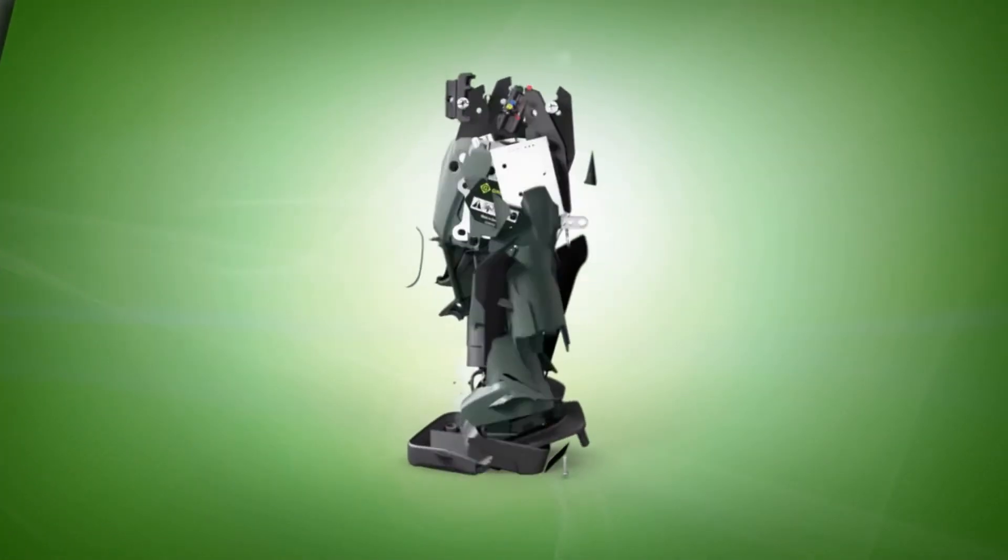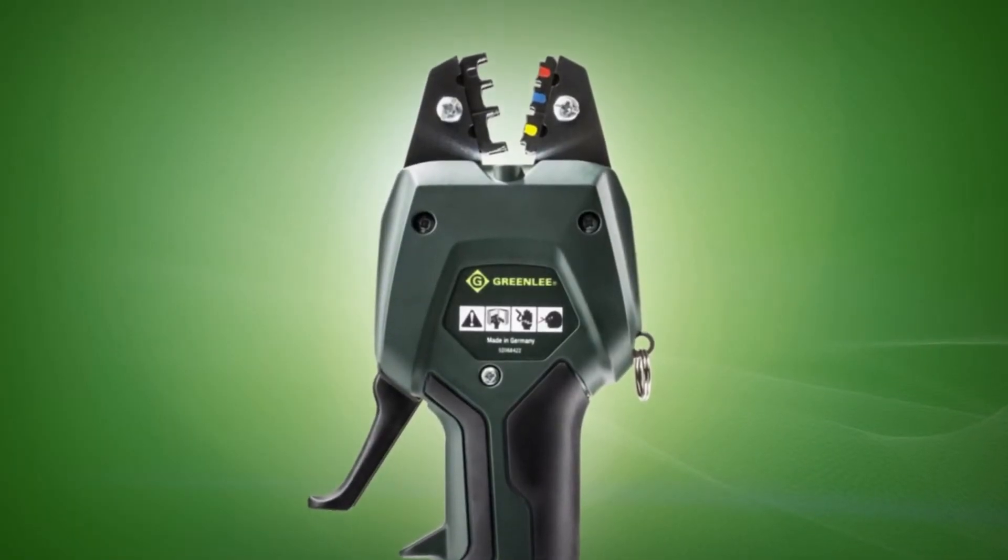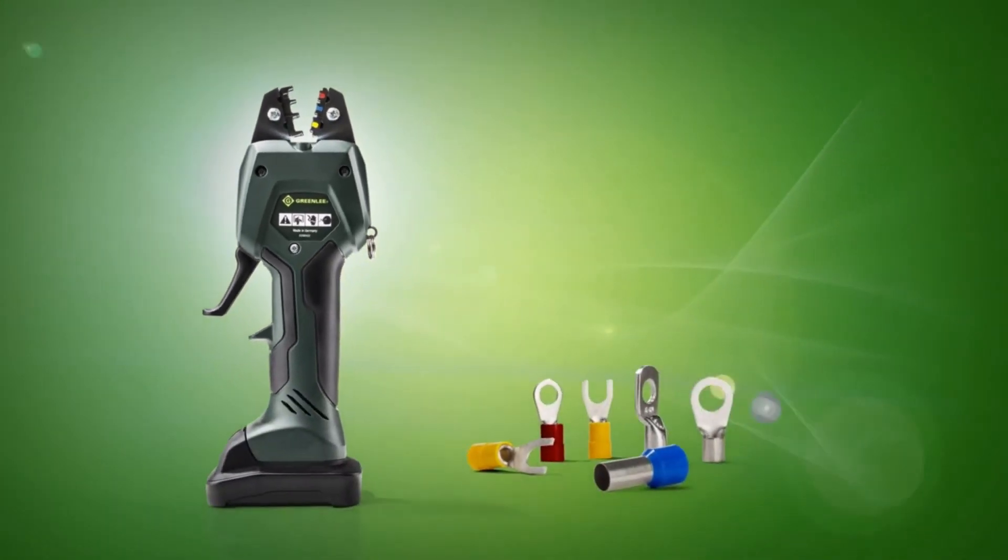Greenlee EK50ML. The world's first electromechanical crimping tool with PowerSense technology, manual pre-clamp, and motorized crimping.